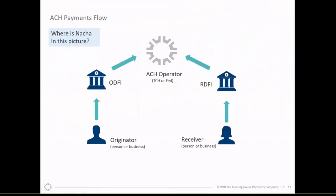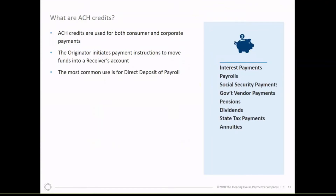Here's a trick question: where is NACHA in this picture? To be clear — NACHA does not process payments. NACHA administers the rules that run the ACH; they don't have hardware that takes in transactions. When NACHA publishes network statistics, they get those numbers from both the Clearinghouse and Fed ACH.